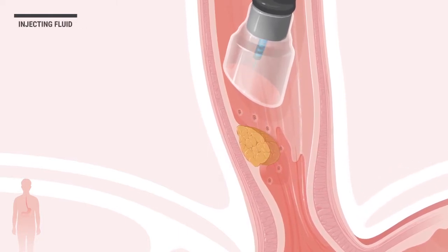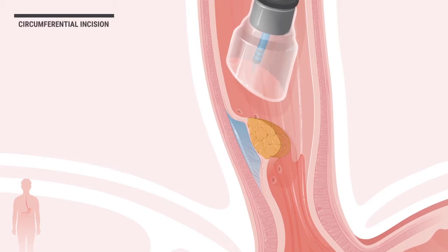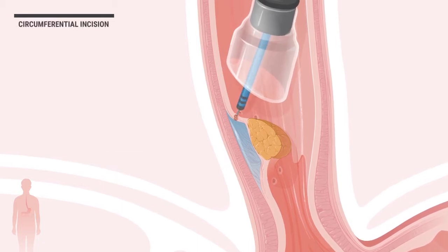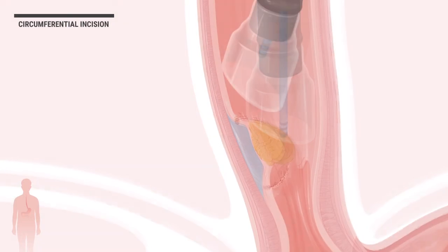Then, a specialized fluid is injected into the submucosa of the esophageal wall, allowing for elevation of the abnormal tissue. This allows the doctor to safely cut along the perimeter of the tumor or abnormal tissue.